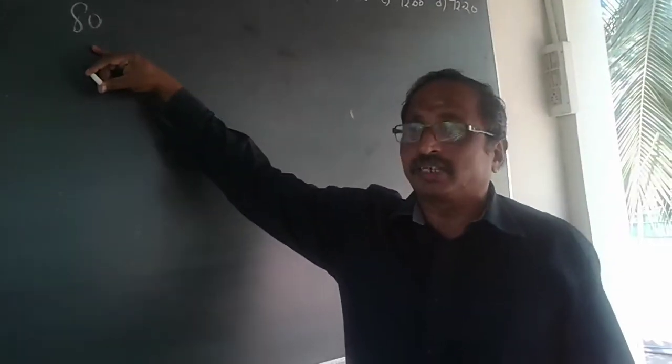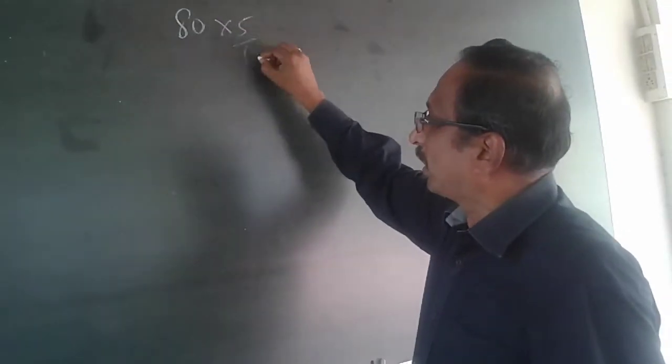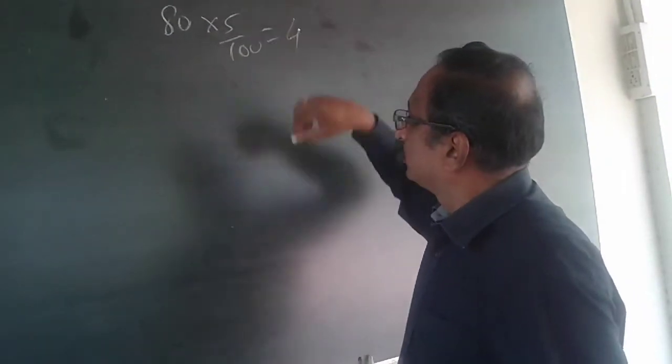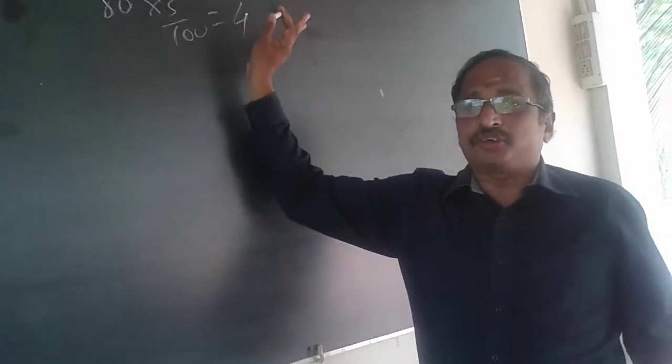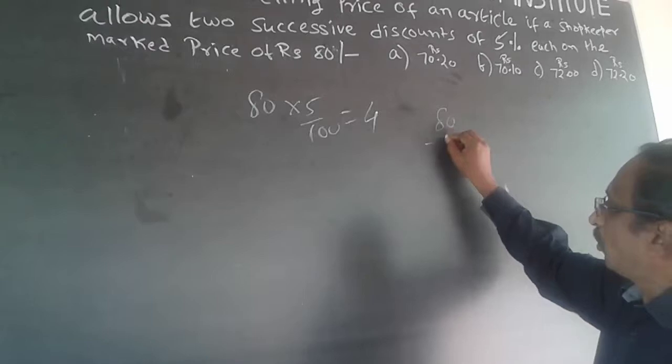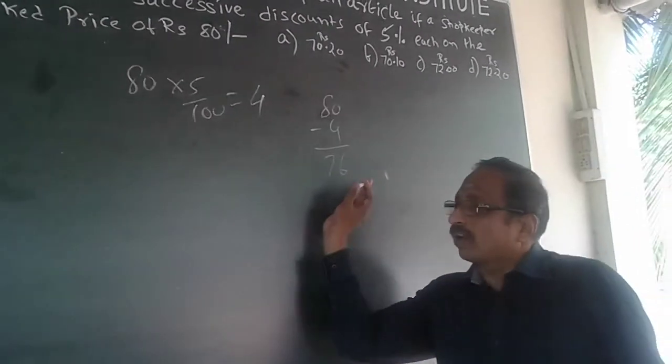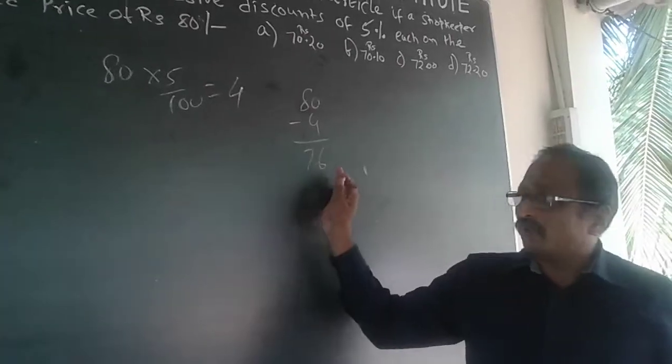So I reduce 5% from this. The calculation: 5% of 80 equals 5/100 times 80 equals 4. Now from this 80, I reduce 4. So 80 minus 4 equals 76. 76 is after having the first discount.